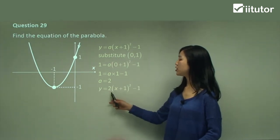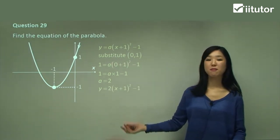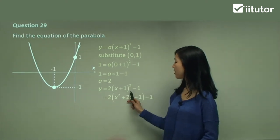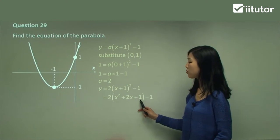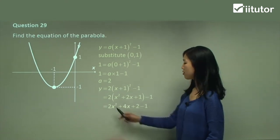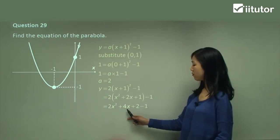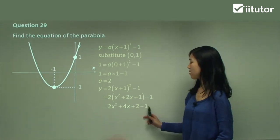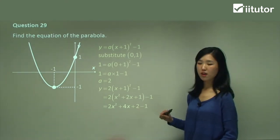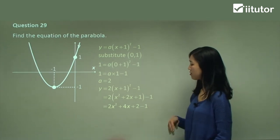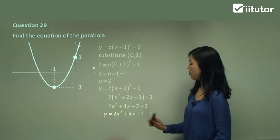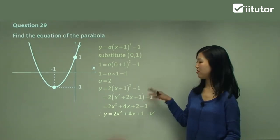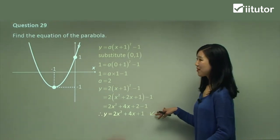Substitute a back in: y equals 2 times x plus 1 squared minus 1. Expanding: 2 times x squared plus 2x plus 1 gives 2x squared plus 4x plus 2, then subtract 1. Gather your like terms — 2 minus 1 is 1. So the final answer is 2x squared plus 4x plus 1. That was question 29 — very repetitive process.